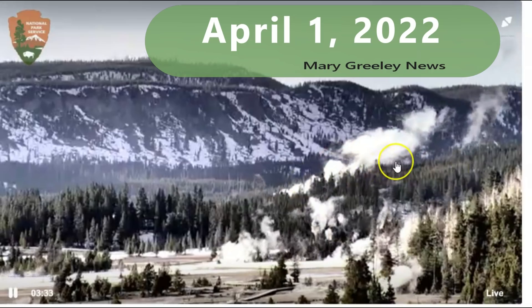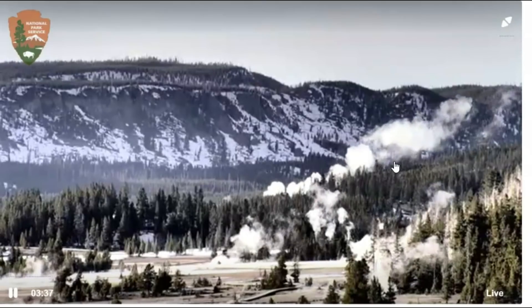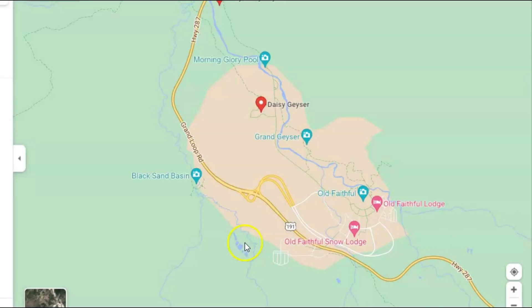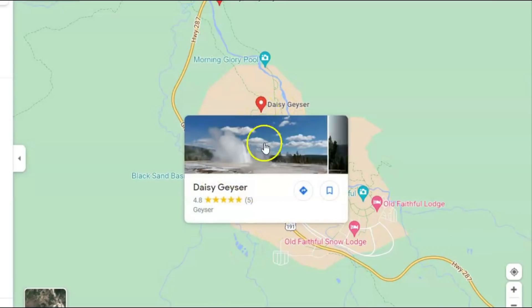It looks like Daisy is currently going off. I'm going to show you a map of the location of that geyser. Here you go. In the middle here is Daisy Geyser. Up over here is the Old Faithful Lodge.